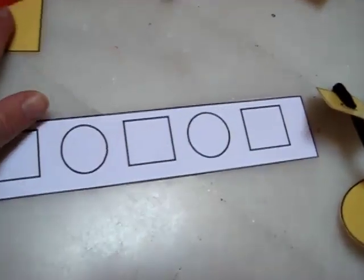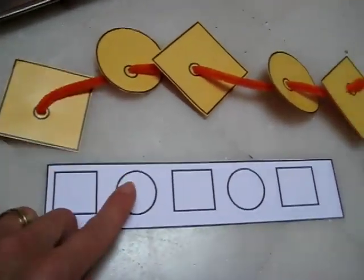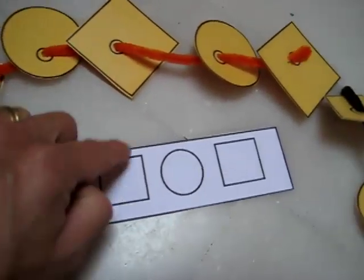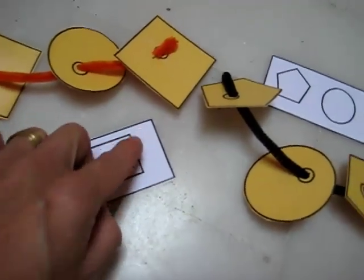Here we made another pattern, which is a square - she put a square. Circle, circle. Square. Circle, circle. Square, square.